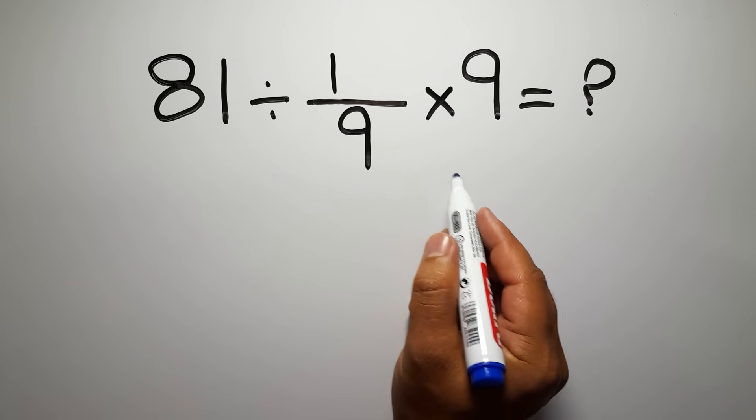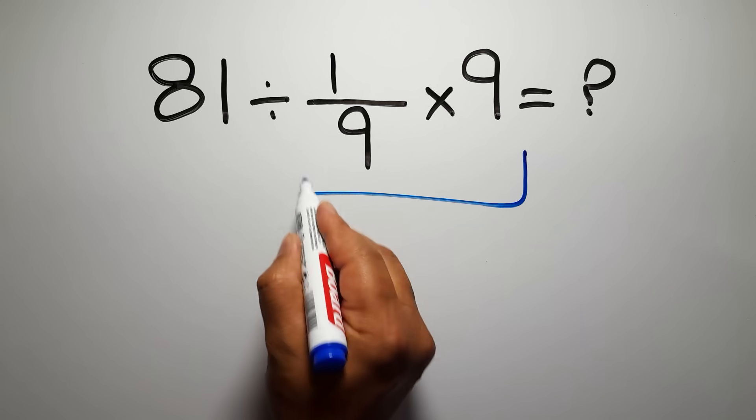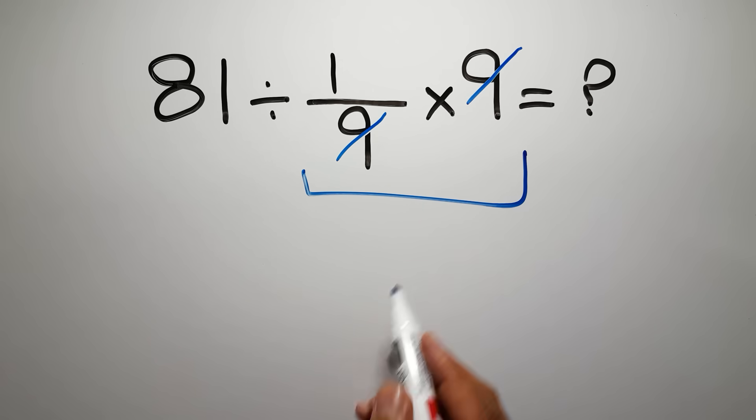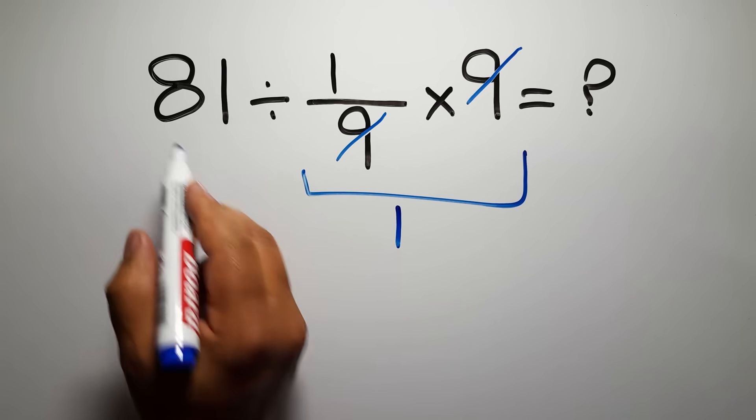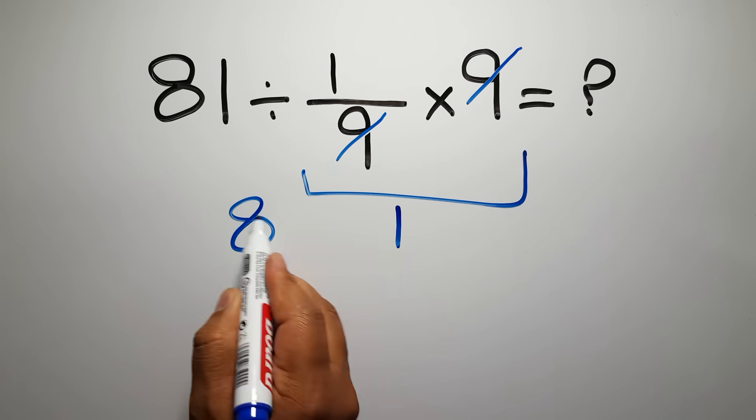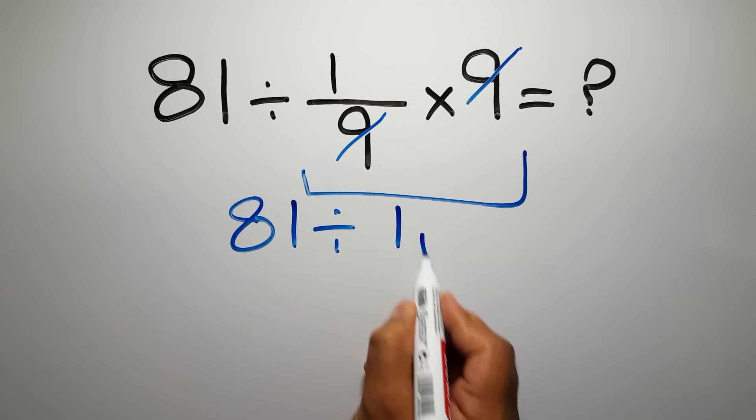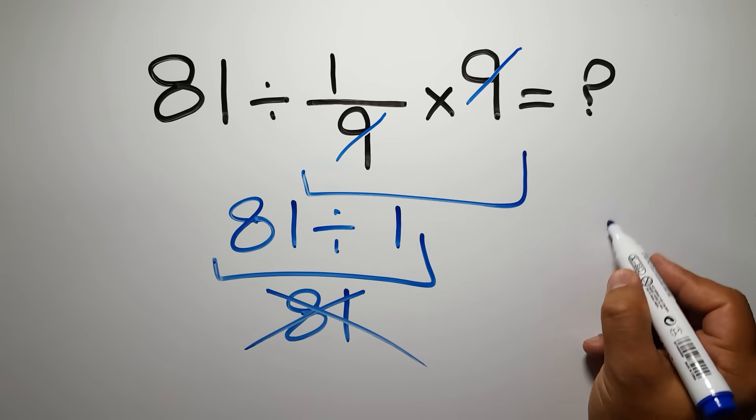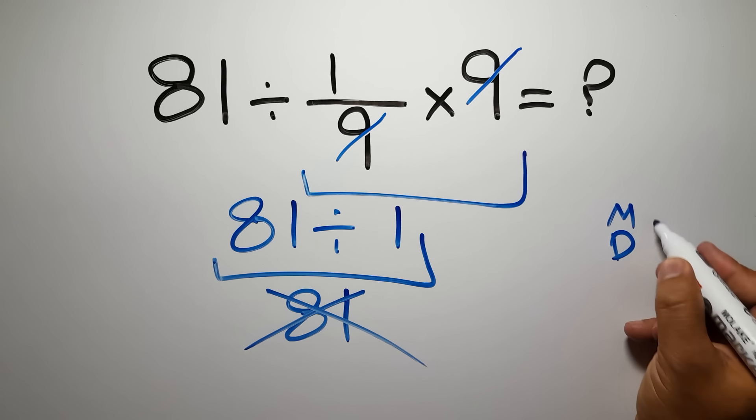First we do this multiplication, 1 over 9 times 9. We can easily cancel this 9 and this 9, so we have just 1. And here we have 81 divided by this, 81 divided by 1 is just 81. But this answer is not correct because according to the order of operations, multiplication and division have equal priority.